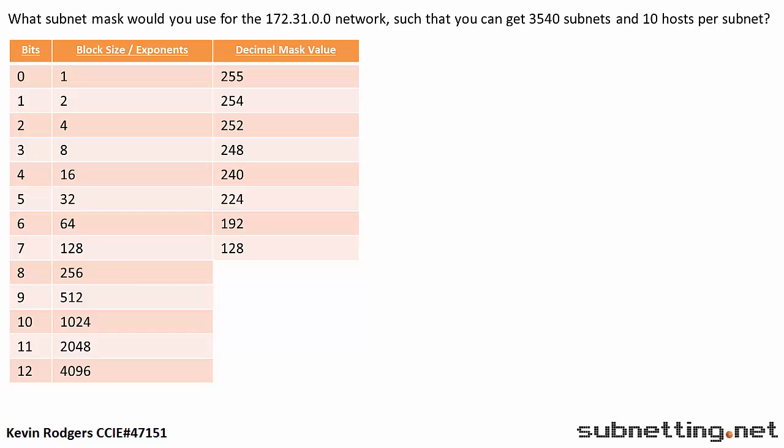What subnet mask would you use for the 172.31.0.0 network such that you could get 3540 subnets and 10 hosts per subnet? The first step is to determine the classful mask, in this case slash 16.